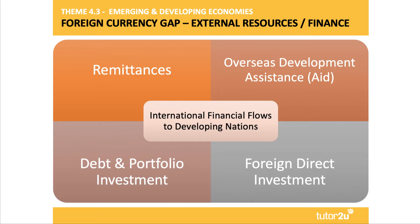Many countries have a gap between what they need to invest as a share of GDP and the domestic savings available to fund that investment. Countries also have quite a significant foreign currency gap — they run short of dollars and euros and other currencies to fund their imports. So there's often a foreign currency and a savings gap, and therefore external resources are deemed necessary to fund development, especially when national savings are lower than needed to fund capital investment. This graphic summarises the main sources of external finance for those countries.